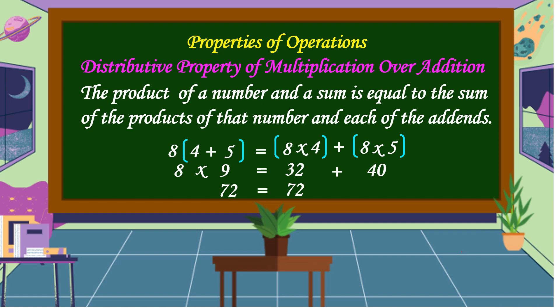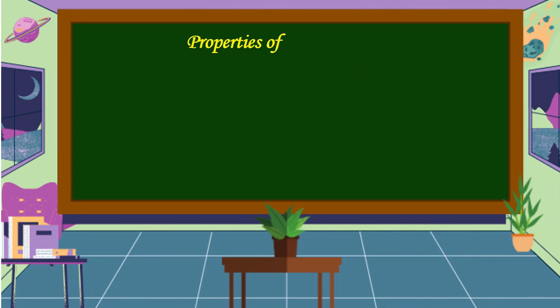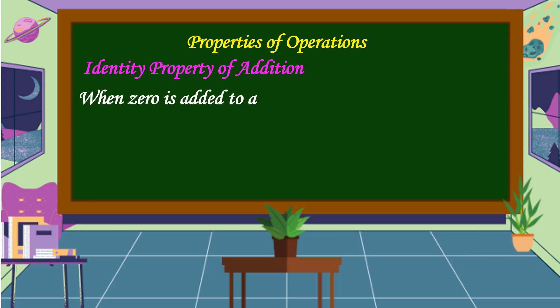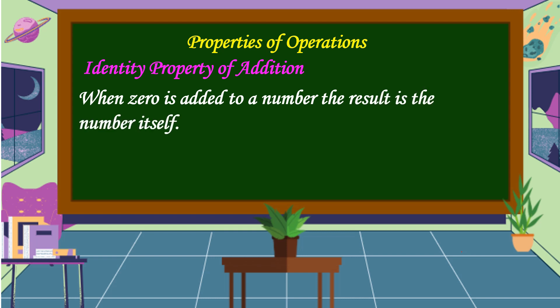Therefore, the product of a number and a sum is equal to the sum of the products of that number and each of the addends. The next property is the identity property of addition. This property states that when 0 is added to a number, the result is the number itself. For example, 9 plus 0 is equal to 9. Therefore, 0 is the identity element of addition.